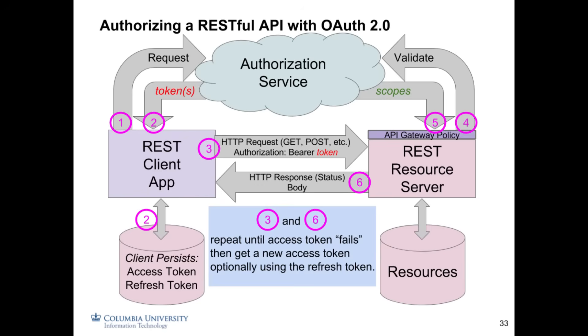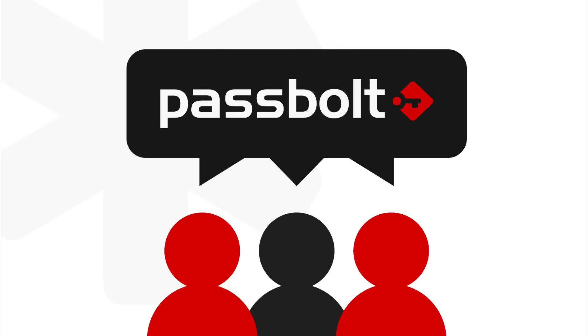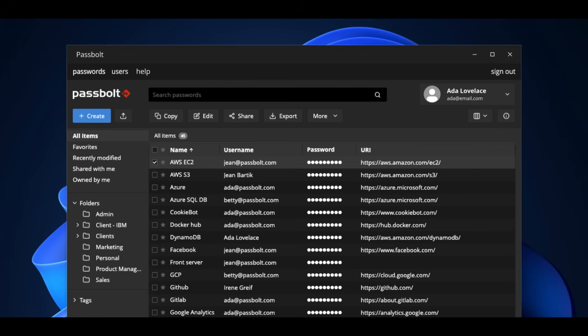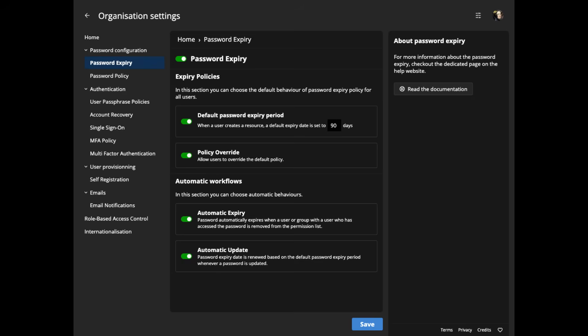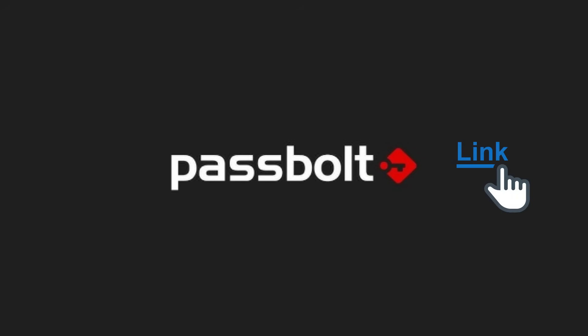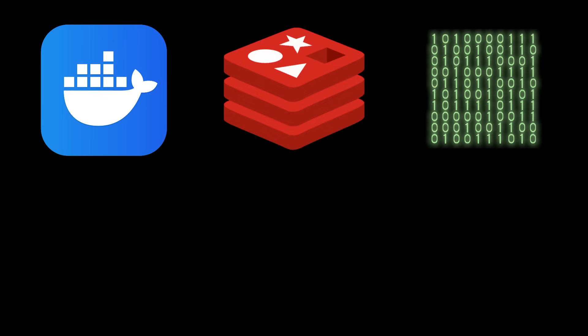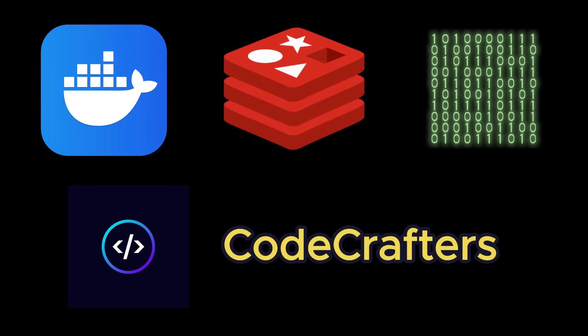What's common is that both versions aim to eliminate password sharing. Passbolt is the best open-source password and secret manager built for devs, with end-to-end encryption, granular access control, and self-hosting options — check it out down below. And if you want to learn how to build Docker, Redis, and compilers from scratch, check out CodeCrafters down below.